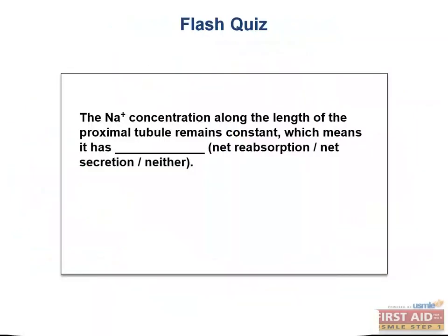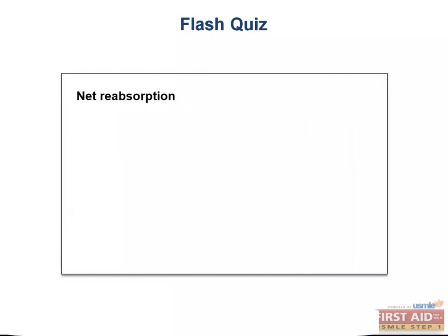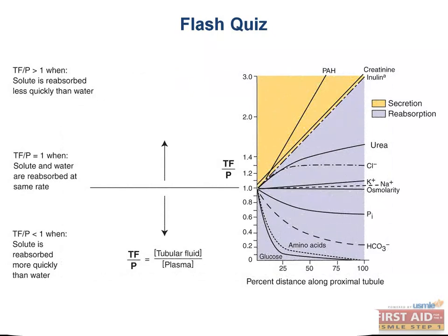Let's try a flash quiz. The sodium concentration along the length of the proximal tubule remains constant — does this mean it has net reabsorption, net secretion, or neither? There will be net reabsorption. Looking back at our graph, the TF to P ratio of sodium is very close to 1 and is in the reabsorption region, meaning sodium concentration remains constant because water moves iso-osmotically with sodium.